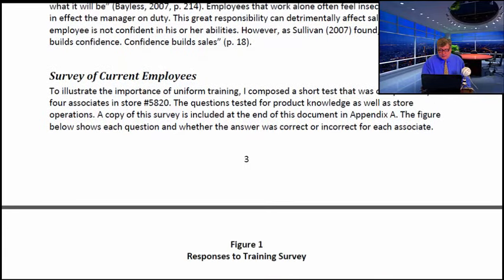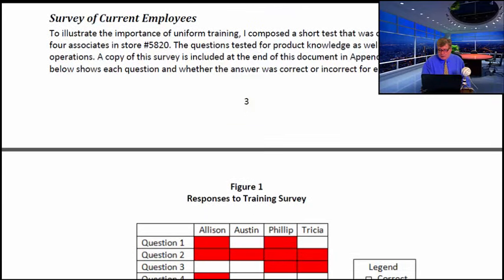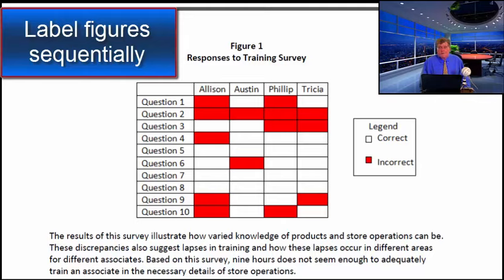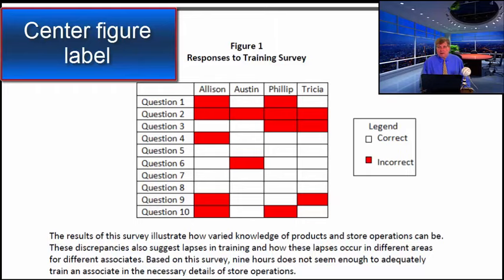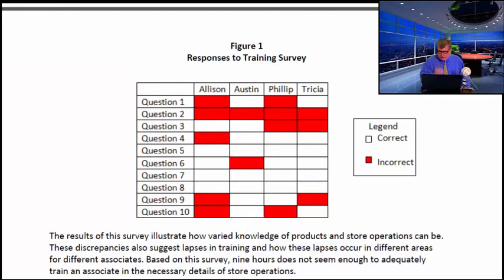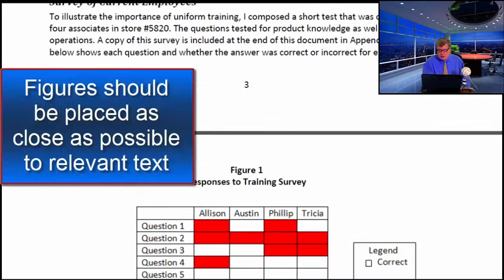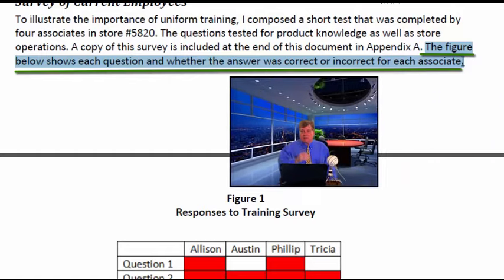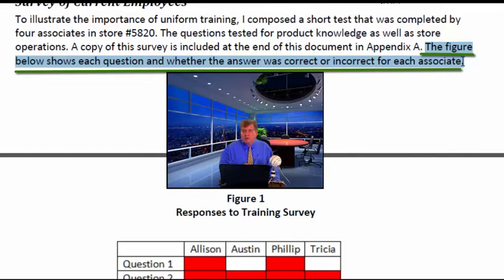After secondary research comes the presentation of primary research, which includes figures. In APA, label figures sequentially — here we have Figure 1, centered above the figure, with a descriptive title below it. Figures should come as close as possible to their mention in the text. Here the text says 'the figure below shows each question and whether the answer was correct or incorrect for each associate.' That sentence introduces and sets up the figure, telling the reader what to expect and how to interpret it. Never simply drop figures into your report without first explaining them.